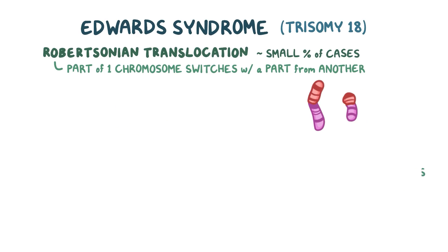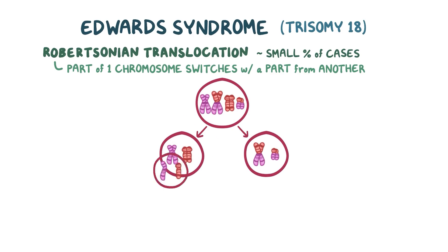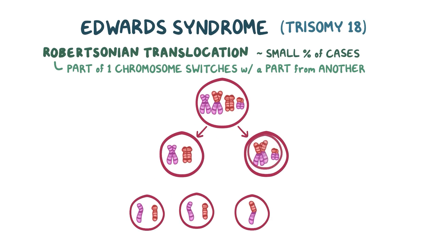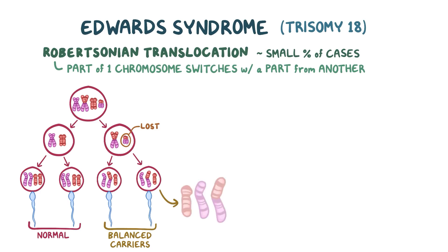Let's say that these cells replicate and split into one with both normal chromosomes, and one with a chromosome with only long arms, and one with only short arms. After splitting again, you'd have two normal cells, and two cells with the big guy since we lost the little guy along the way. Now contribute the other parent's DNA, and you've got two normal cases, and then two other cases that are balanced carriers. We say they're balanced because they've got both long arms, and so most of the genes are still there.